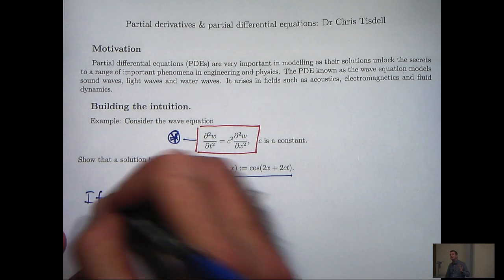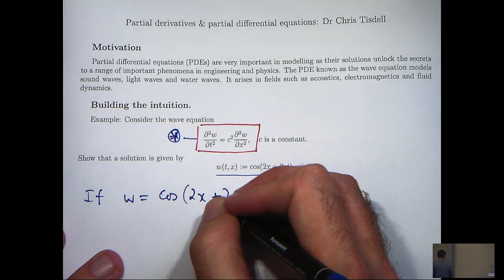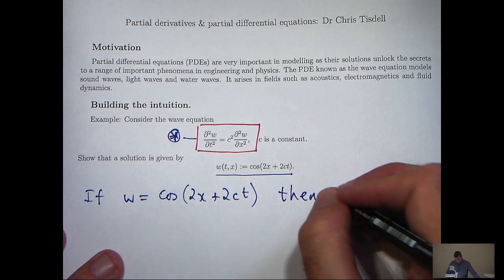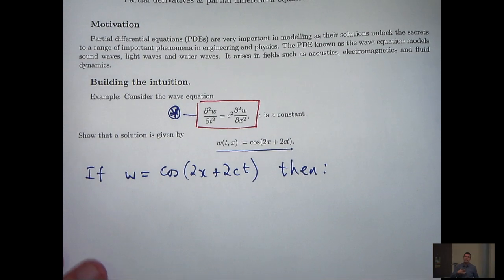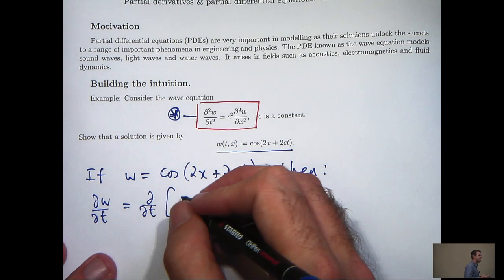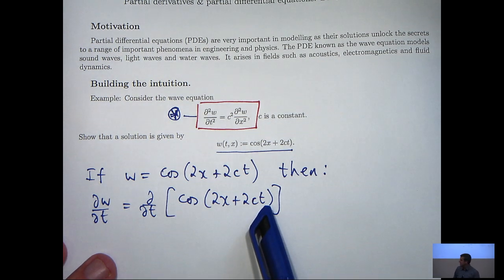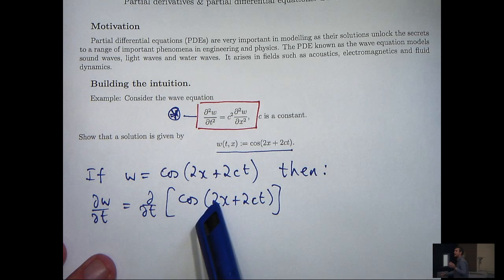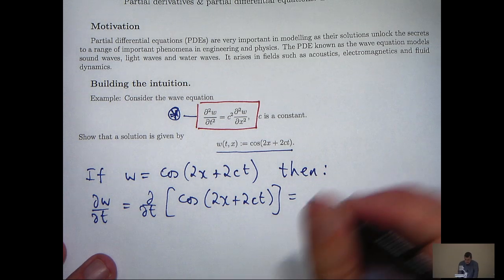If W is cos(2CT + 2X), where C is a constant and T and X are the variables, then let's calculate the partial derivatives. These are second-order partials, so we're going to have to calculate first-order partials first. So dW/dt is just d/dt of this function. When we take partial derivatives, we differentiate with respect to T, holding all the other variables fixed. So imagine X is fixed, C is a constant anyway, and we differentiate normally with respect to T.